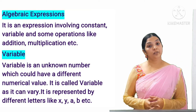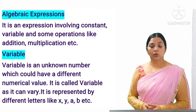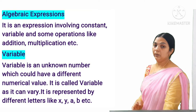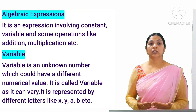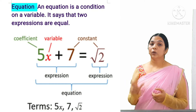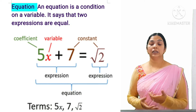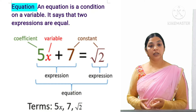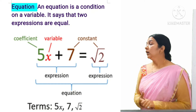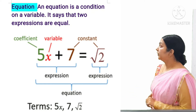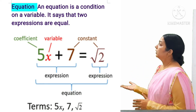A variable can be represented by different letters — for example, x, y, z, a, b, c, and so on. These are all known as variables. Now, what is an equation? When an algebraic expression gets a sign of equality, it becomes an equation. We can say an equation is a condition on a variable — it says that two expressions are equal. For example, 5x + 7 = √2 is an equation.